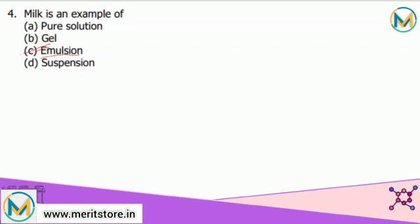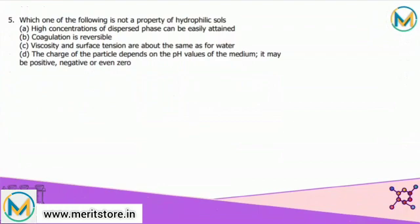Looking towards the next question. Which one of the following is not a property of hydrophilic sol? For hydrophilic solutions, high concentration of dispersed phase can be easily obtained as it is solvent loving. Coagulation is also reversible as they have strong affinity for solvent. The viscosity and surface tension differ significantly from dispersed phase and dispersion medium. And the charge of the particle depends upon the pH of the medium, which could either be positive, negative, or even zero also. So correct answer is option C, that is viscosity and surface tension are about the same as for water.